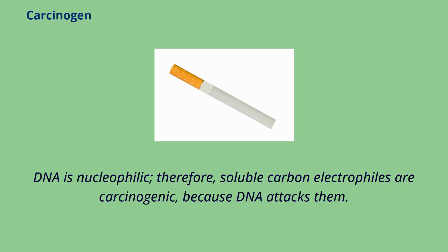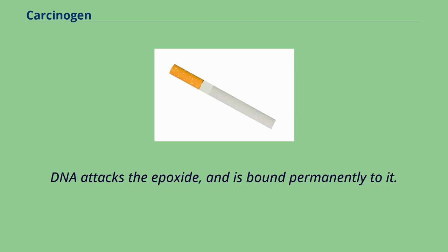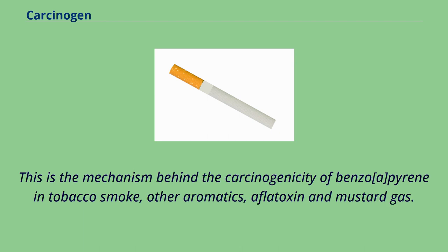DNA is nucleophilic; therefore, soluble carbon electrophiles are carcinogenic, because DNA attacks them. For example, some alkenes are toxicated by human enzymes to produce an electrophilic epoxide. DNA attacks the epoxide and is bound permanently to it. This is the mechanism behind the carcinogenicity of benzo[a]pyrene in tobacco smoke, other aromatics, aflatoxin, and mustard gas.